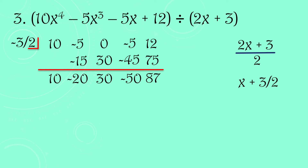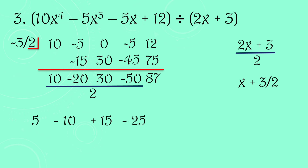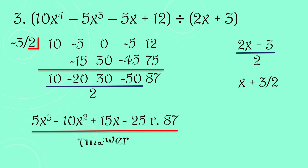Since we divided by 2 earlier, we now divide the quotient coefficients by 2: 10 ÷ 2 = 5, −20 ÷ 2 = −10, 30 ÷ 2 = 15, −50 ÷ 2 = −25. The dividend degree is 4, so quotient degree is 3. Our answer is 5x³ − 10x² + 15x − 25 remainder 87, or 5x³ − 10x² + 15x − 25 + 87/(2x + 3).